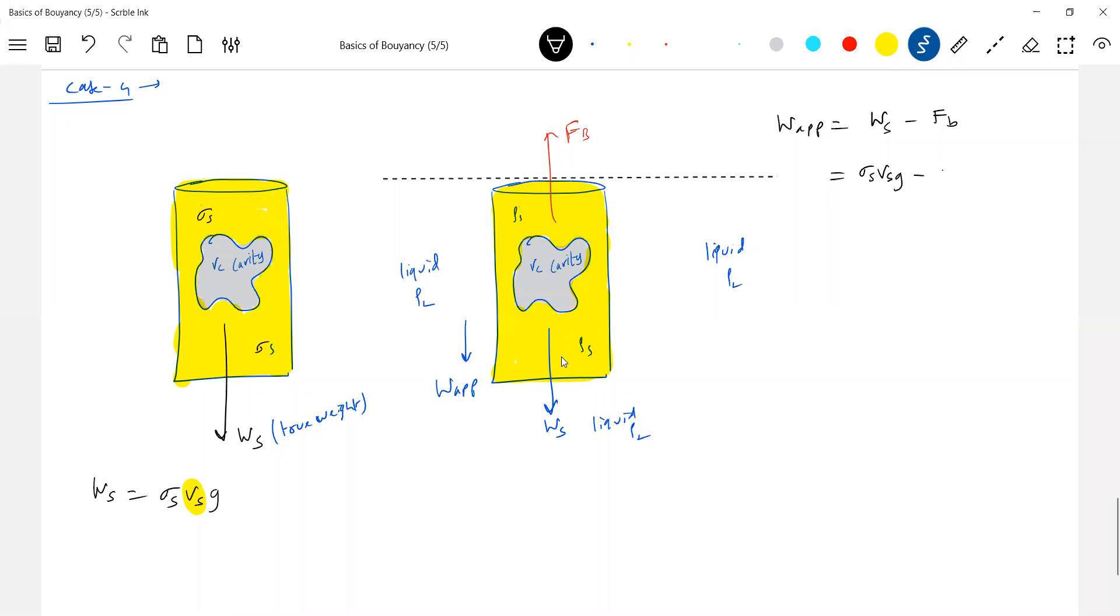What is the buoyant force total? Rho l, volume immersed. The liquid doesn't know that there's a cavity. What is the total volume of solid that is immersed? Volume of cylinder with cavity, without cavity, liquid doesn't know all that. Therefore, volume of cylinder will be Vc equals Vs plus volume of cavity.